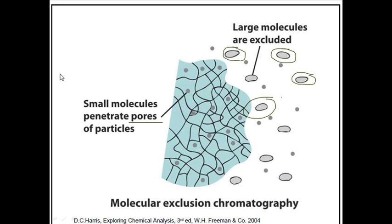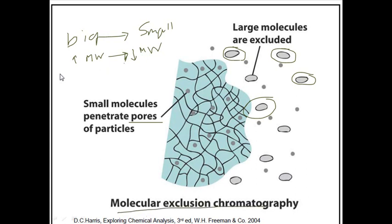So in these cases, the large molecules elute first, then the smaller molecules. This way we can differentiate the big molecules from the small molecules - from higher molecular weight towards lower molecular weight molecules. So we can separate molecules using molecular weight, which is why it is called molecular exclusion chromatography.